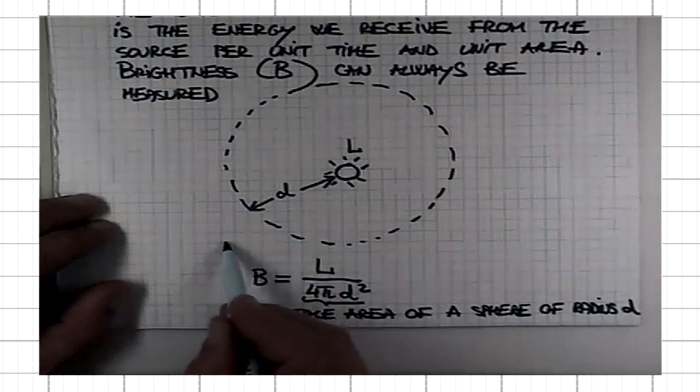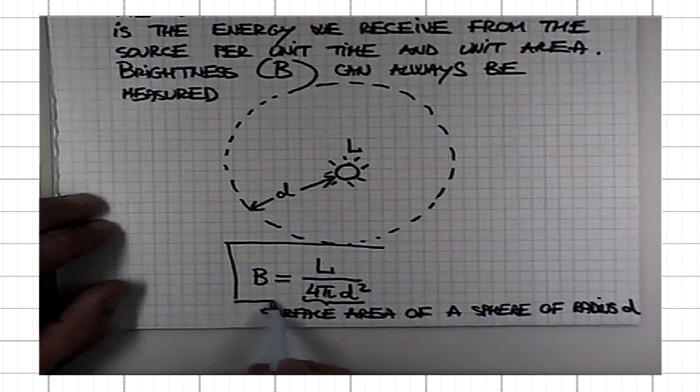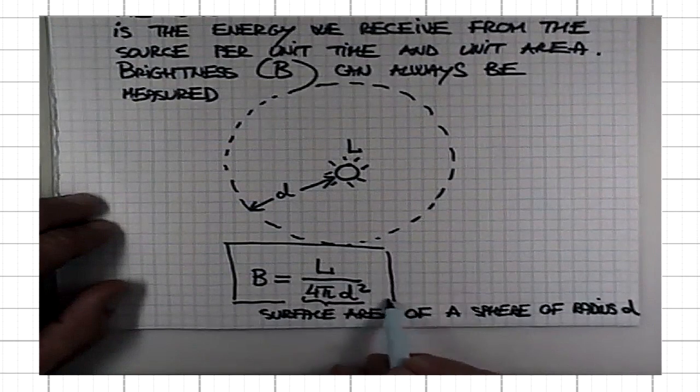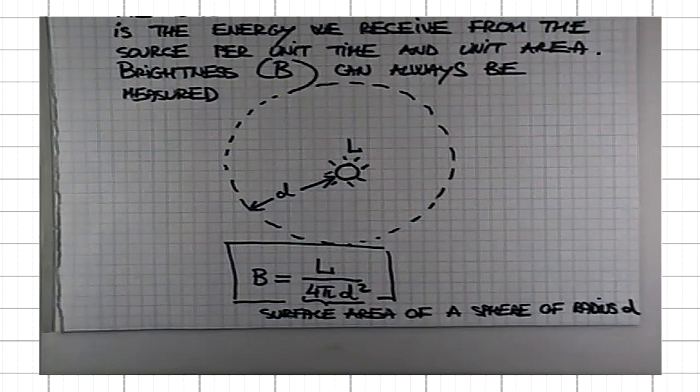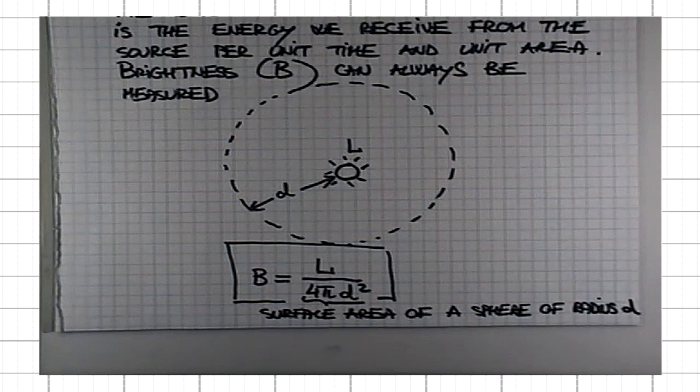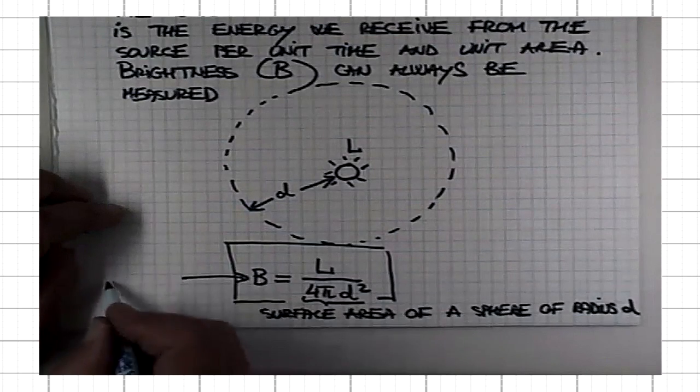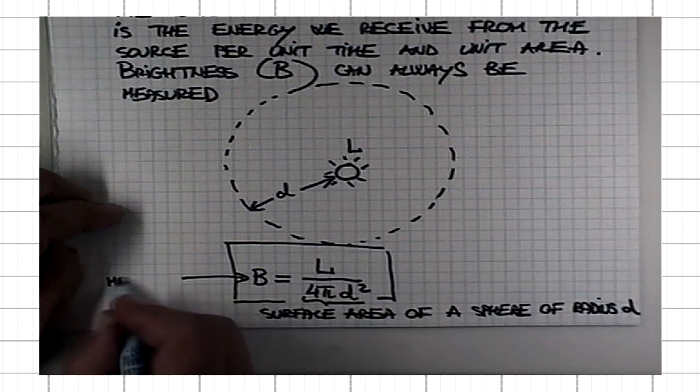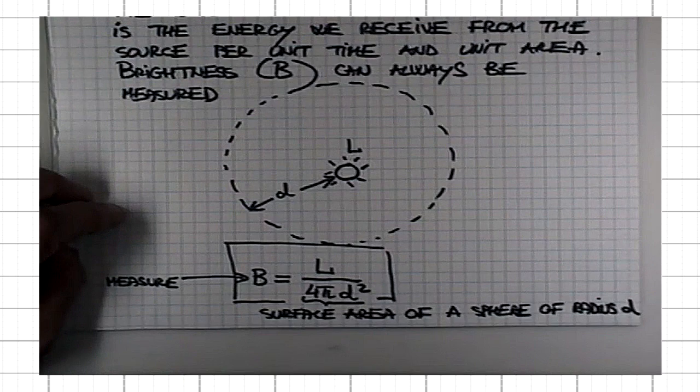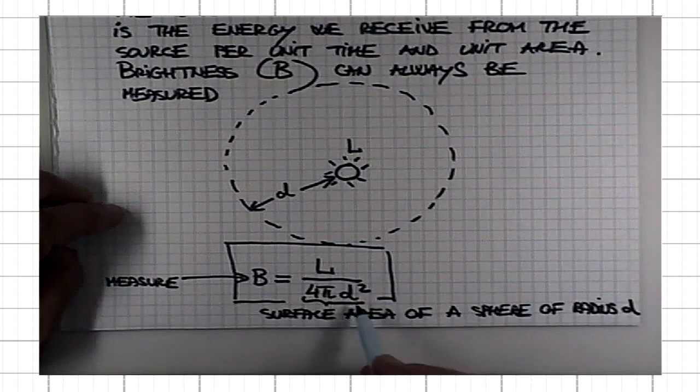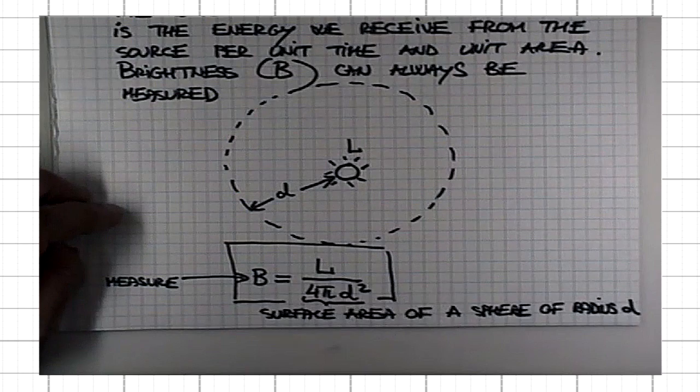This relation here that connects the brightness, the luminosity, and the distance is one of the most important relations for astronomers. We always measure brightness. At least for nearby stars, we measure the distance using, say, parallax.